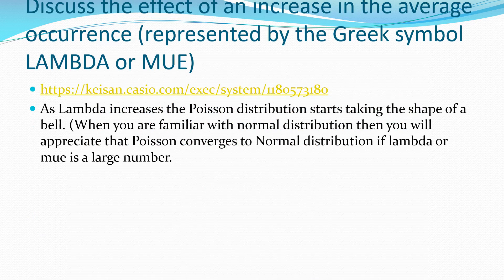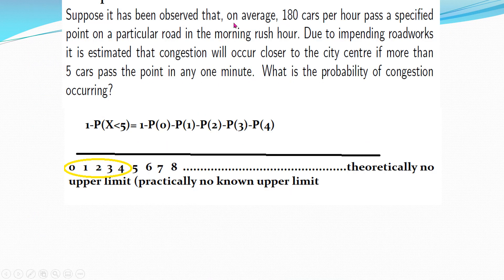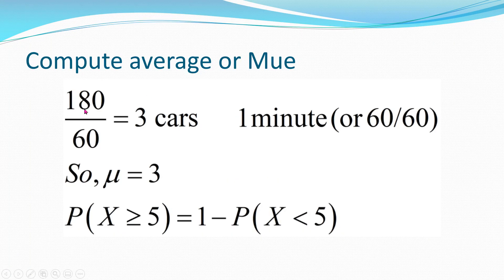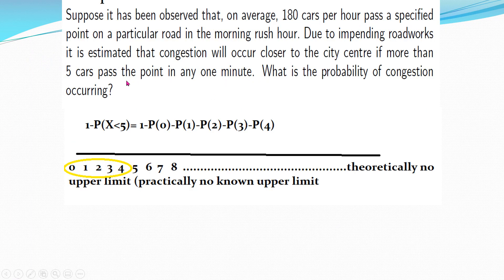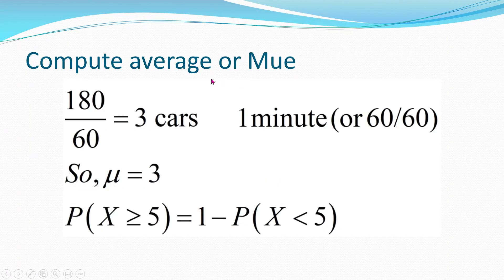Let's do one numerical example. Suppose that on average, 180 cars per hour pass a specified point on a particular road during morning rush hour. Due to impending road works, it is estimated that congestion will occur if more than 5 cars pass the point in any 1 minute. The average is given for 60 minutes, so we need to adjust it to 1 minute. We have 180 cars per 60 minutes, so for 1 minute the expected number of cars is 3. We adjust mu = 180 / 60 = 3.